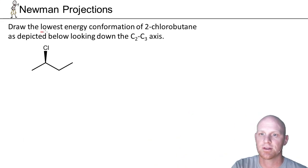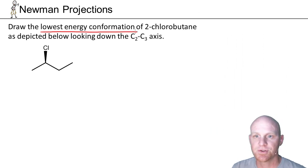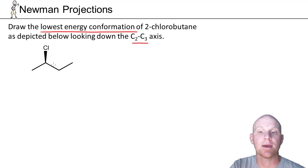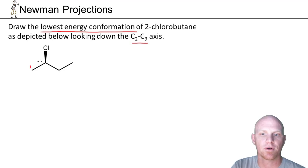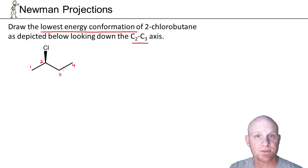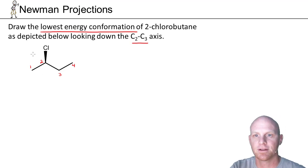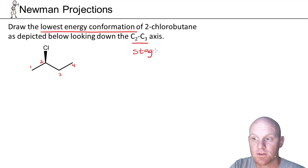We're asked to draw the lowest energy conformation of 2-chlorobutane, looking down the C2–C3 axis. The C2 and C3 numbering comes from the naming system: with 2-chlorobutane, we number 1, 2, 3, 4 left to right because the chlorine as the only substituent gets the lower number that way. Since we want the lowest energy conformation, we should draw a staggered conformation, not an eclipsed one.